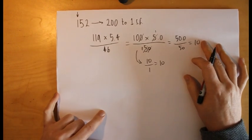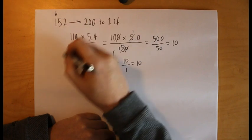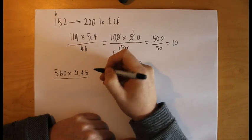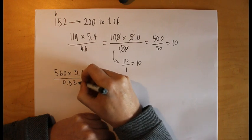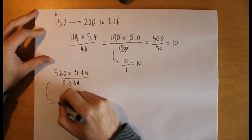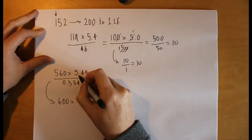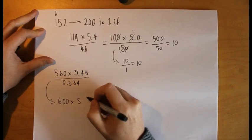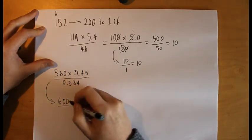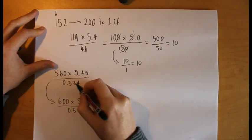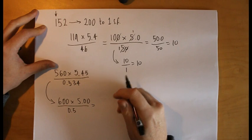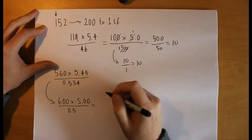Let's have another little go at a different question: 560 multiplied by 5.45, and that's all divided by 0.534. Very quickly then, the 560 rounds to 600, the 5.45 rounds to five, and finally we divide all that by 0.5, and we could quickly work that out and get our answer.